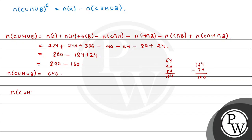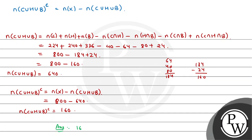What we need to find is the complement of C union H union B, which equals total students minus n(C∪H∪B). That is 800 minus 640 = 160. So the complement of (C∪H∪B) is 160. Therefore, 160 students did not play any game. That is our answer. Hope you understood it well. Best of luck.